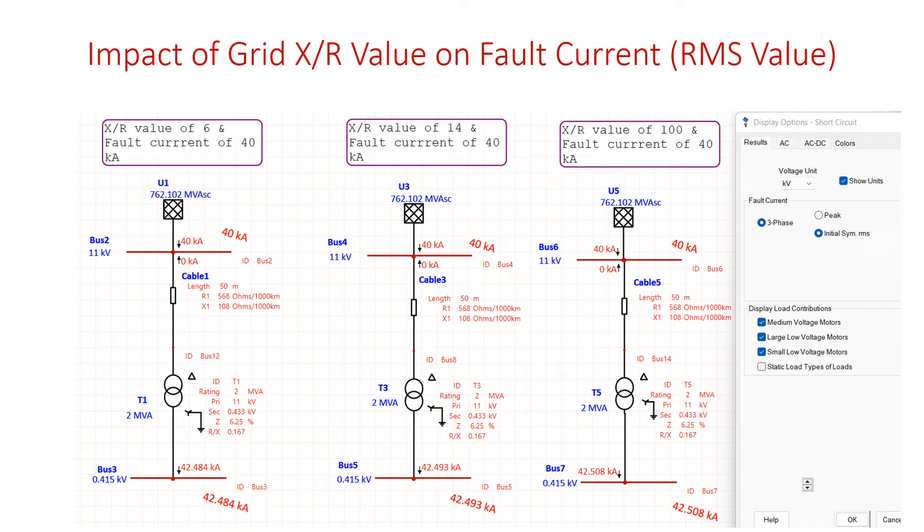But if you are displaying peak value, what will happen? Before moving to that, let us conclude that X by R value on fault current, especially on RMS value of fault current doesn't have any impact.